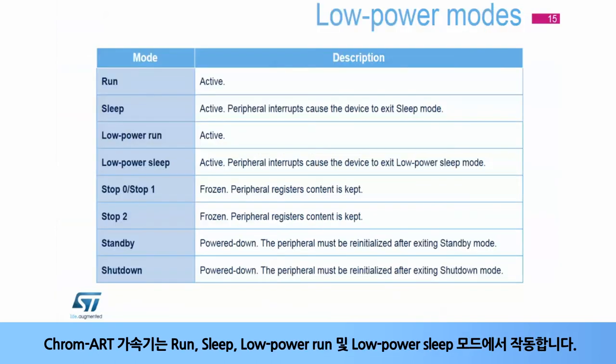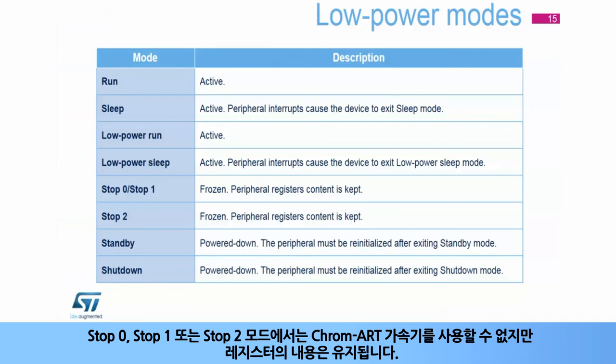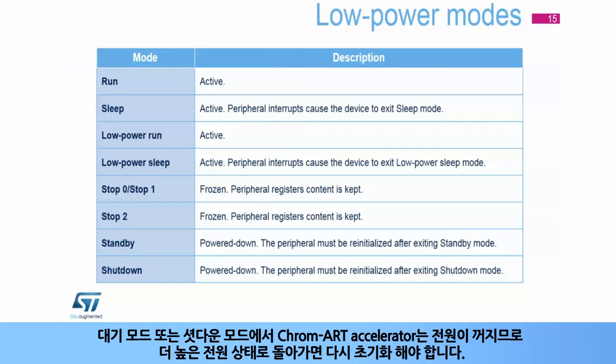The Chrom-ART Accelerator is active in Run, Sleep, Low Power Run, and Low Power Sleep modes. In Stop 0, Stop 1, or Stop 2 modes, the Chrom-ART Accelerator is not available, but the contents of its registers are kept. In Standby or Shutdown modes, the Chrom-ART Accelerator is powered down and must be re-initialized when returning to a higher power state afterwards.